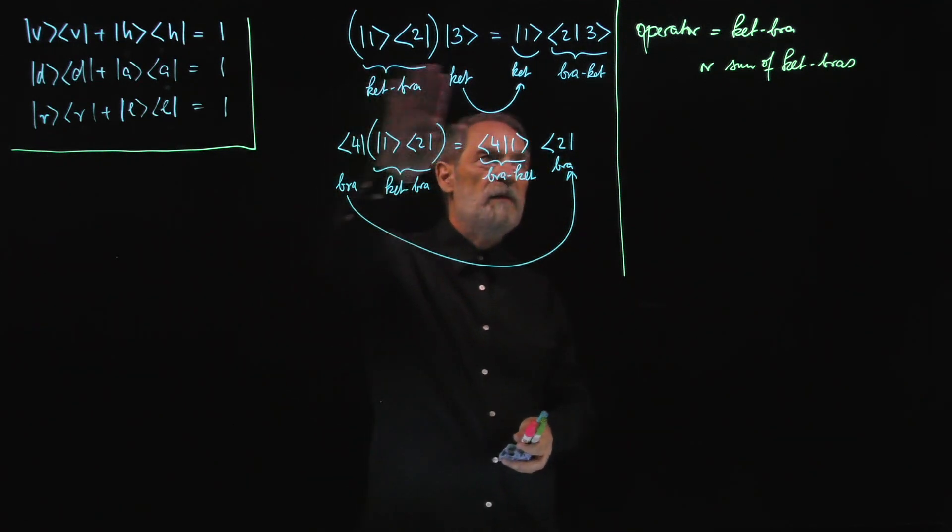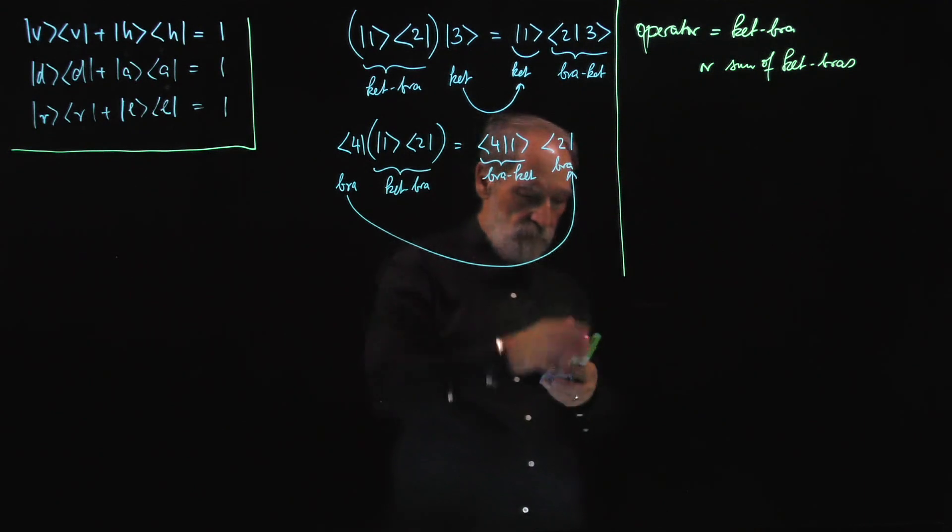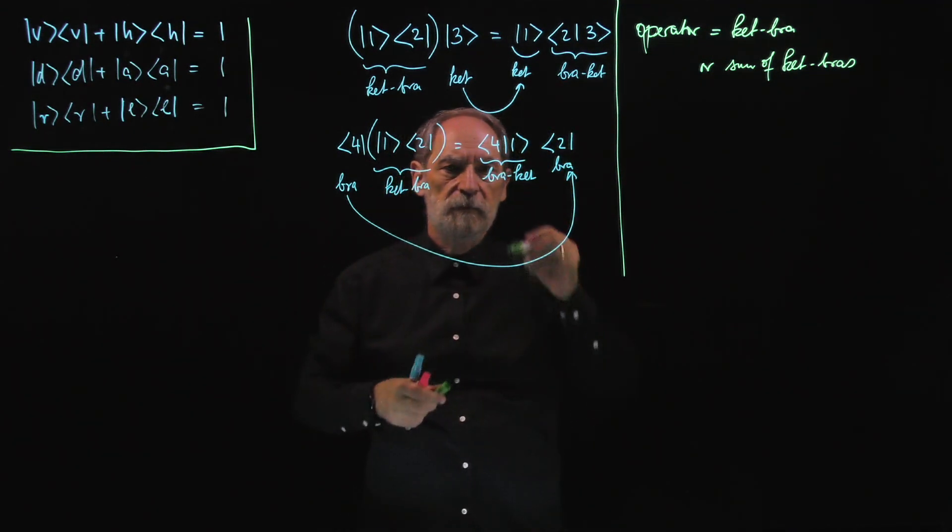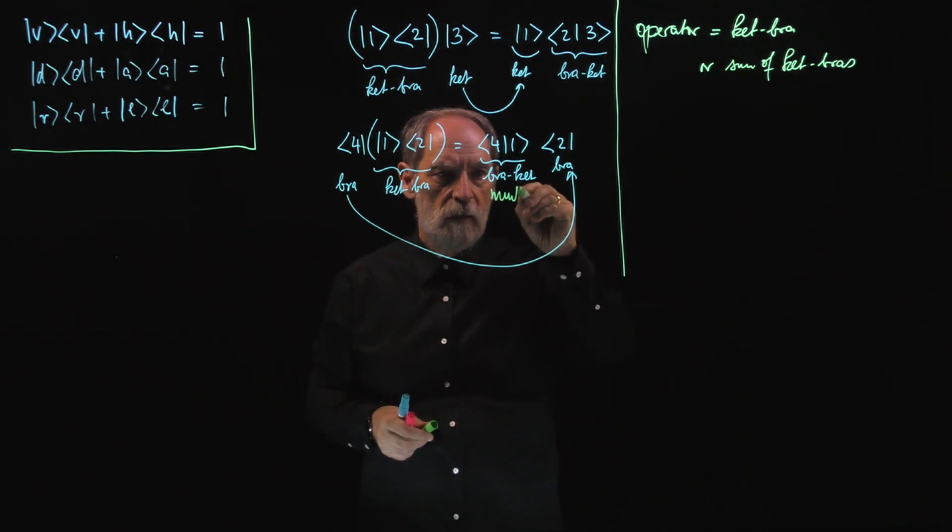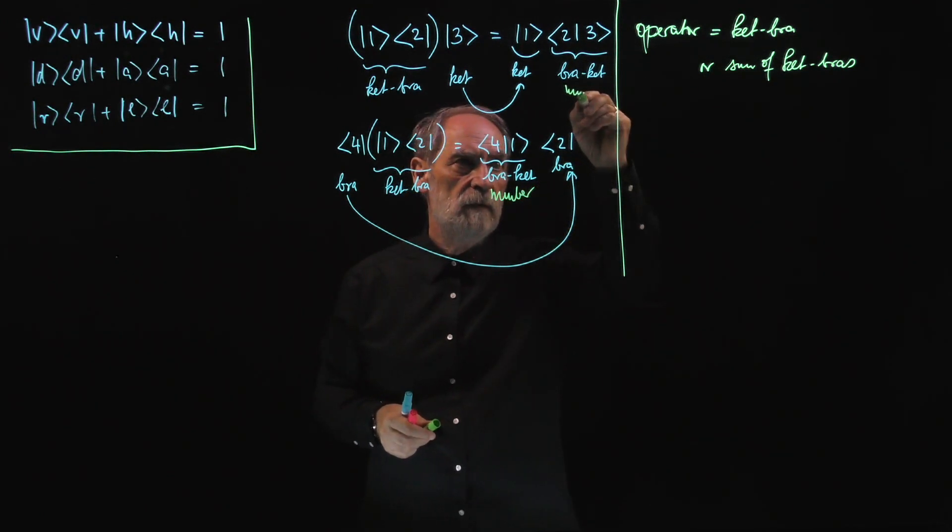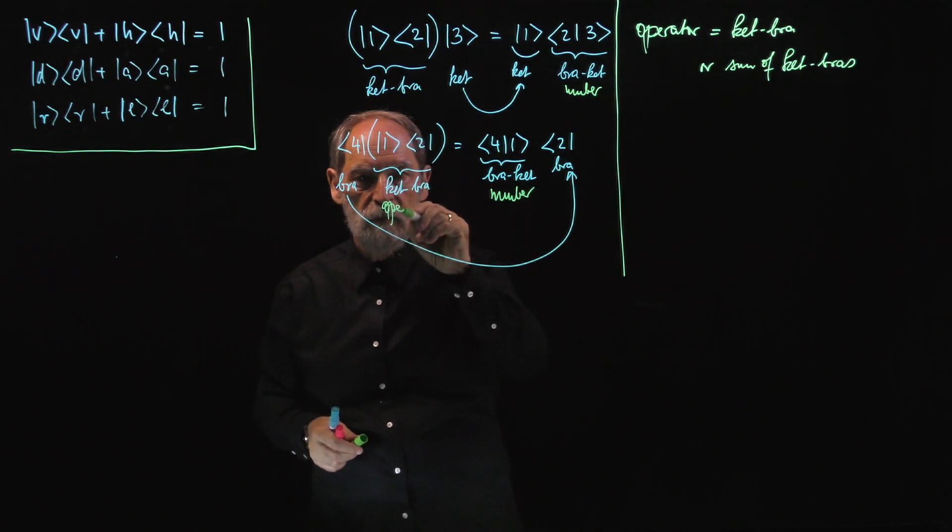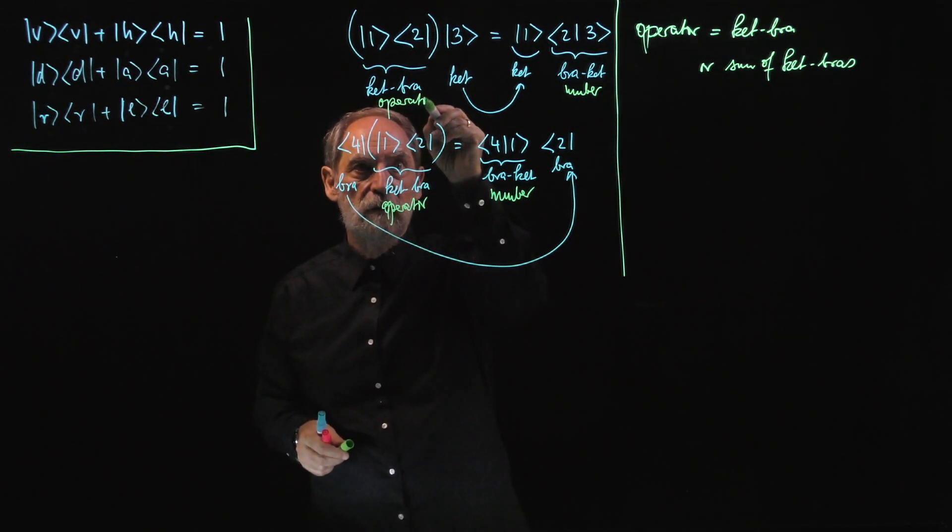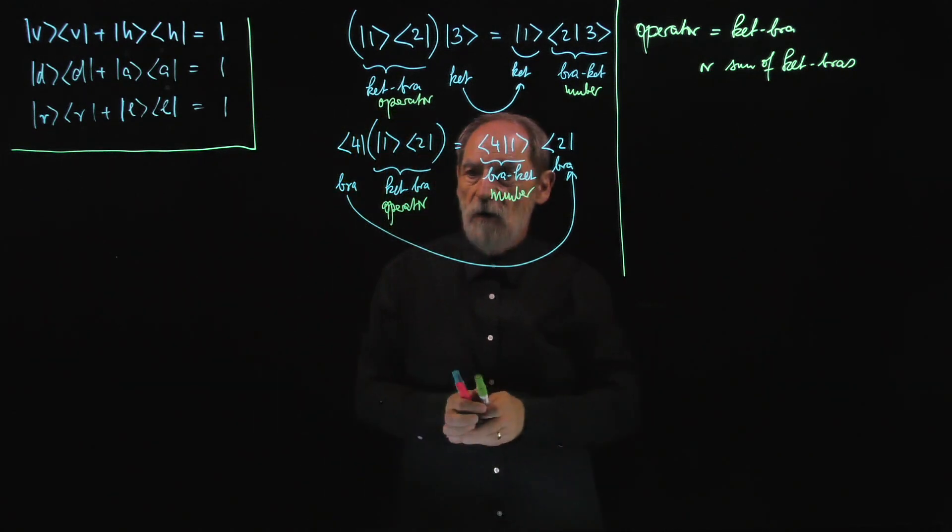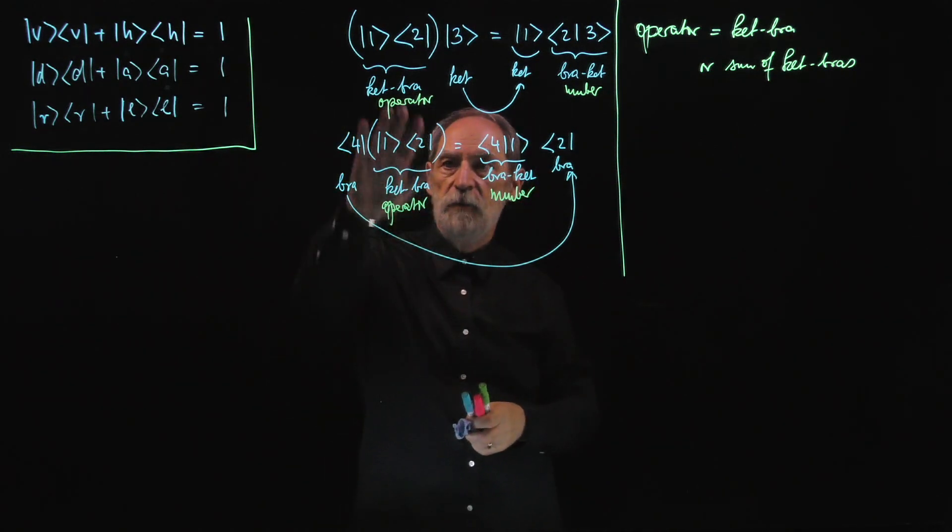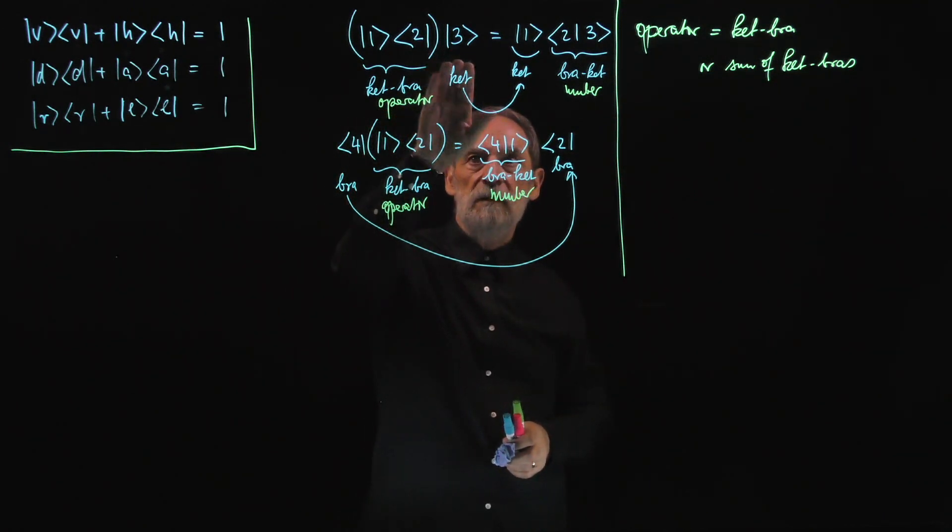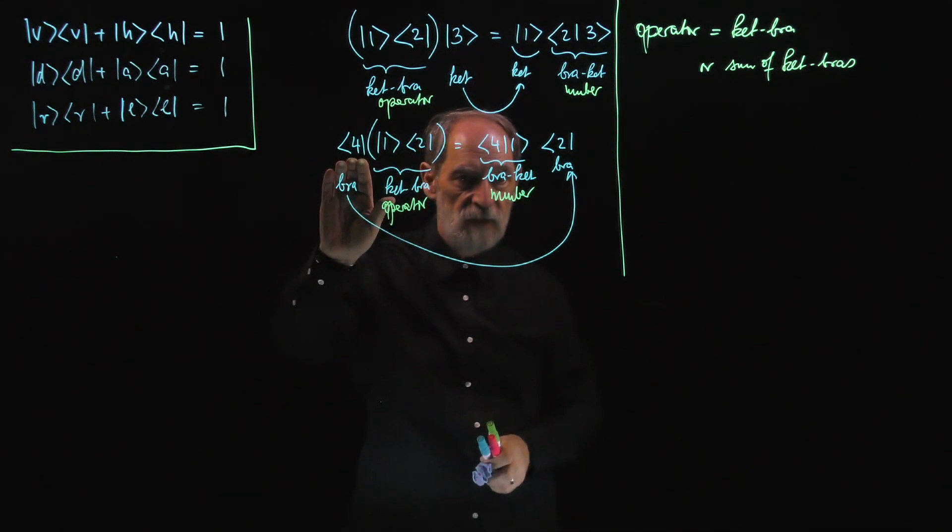We have brackets which are numbers. This is a number. This is an operator. And this is an operator. And the operators are represented by matrices fitting to the columns that represent the kets and the rows that represent the bras.